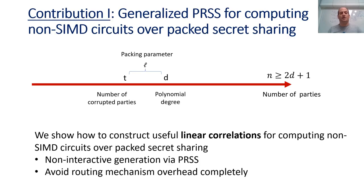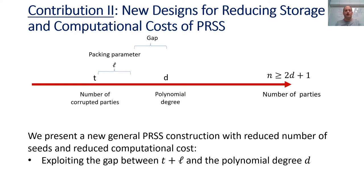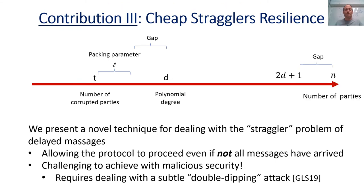Our first contribution is a way to construct useful linear correlations using PRSS to support computation of non-SIMD circuits over packed secret sharing, which avoids the routing mechanism overhead from previous works completely. Our second technical contribution is a new general PRSS construction with reduced number of seeds and reduced computational cost when the polynomial degree D is higher than what is required by the corruption threshold T and the packing parameter L. Our third contribution is cheap straggler resilience.